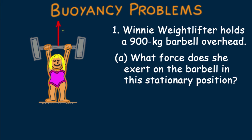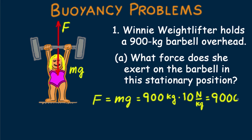The answer is simple. We show the forces that act on the barbell and conclude her upward force is equal in magnitude to the weight of the barbell. We express g as 10 newtons per kilogram, so it turns out the barbell has a weight of 9,000 newtons.